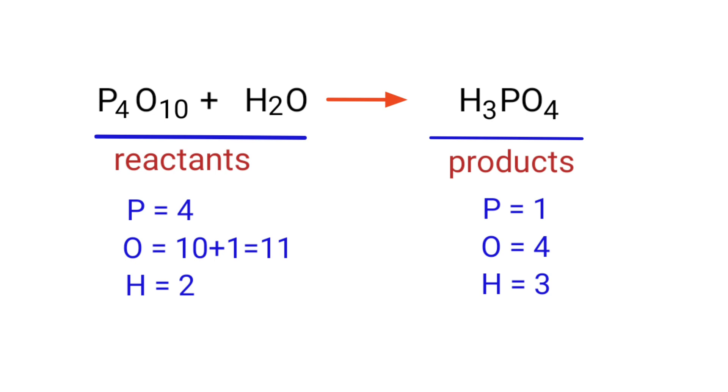In this equation, we need to balance the phosphorous atoms first. To do this, we need to put a coefficient of 4 in front of H3PO4.